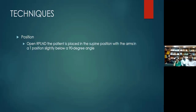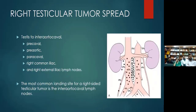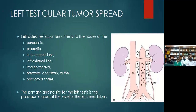The landing sites of right and left testes are the concept behind template dissection. For a right testicular tumor, the template should include the interaortocaval region and the whole area below the renal hilum on both sides including the midline, but can spare the common iliac on the left side and aortic bifurcation on the left.